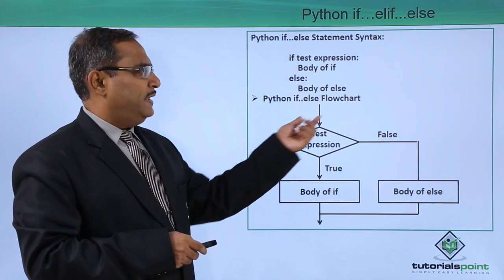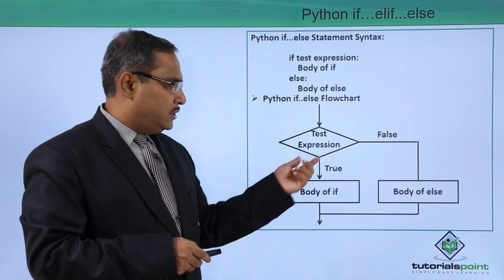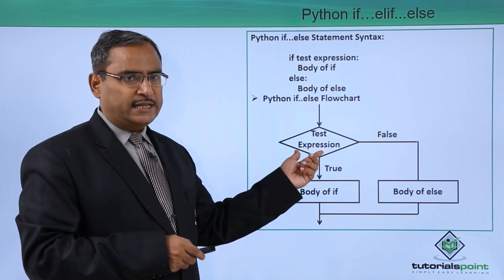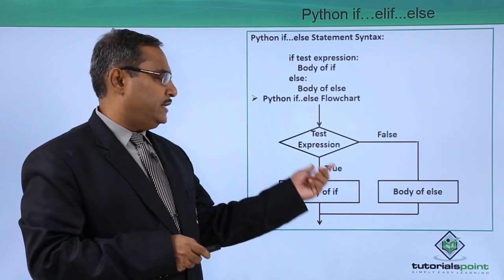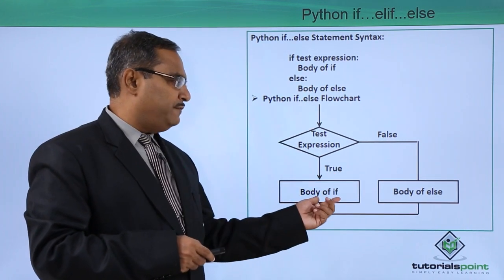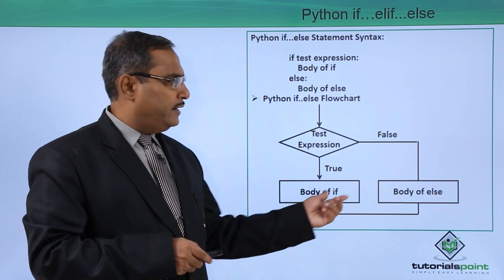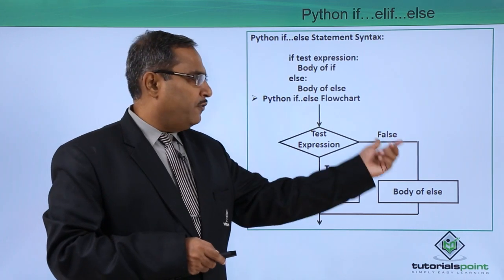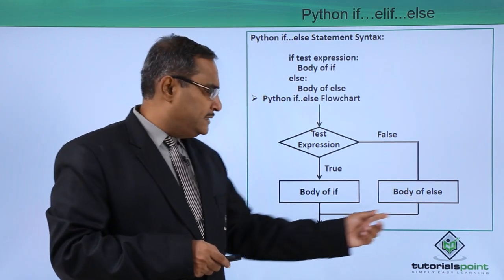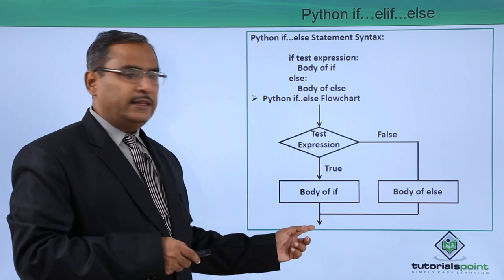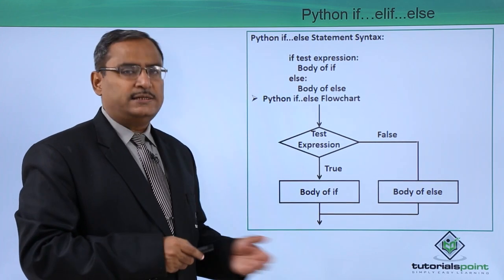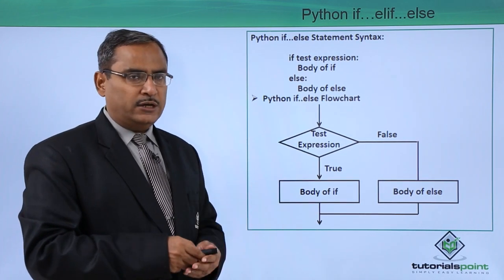Python if-else flowchart: the test expression is evaluated — if it is true, the body of if gets executed; if it is false, the body of else gets executed. After either branch, the control merges and goes on to the next statements in the code.